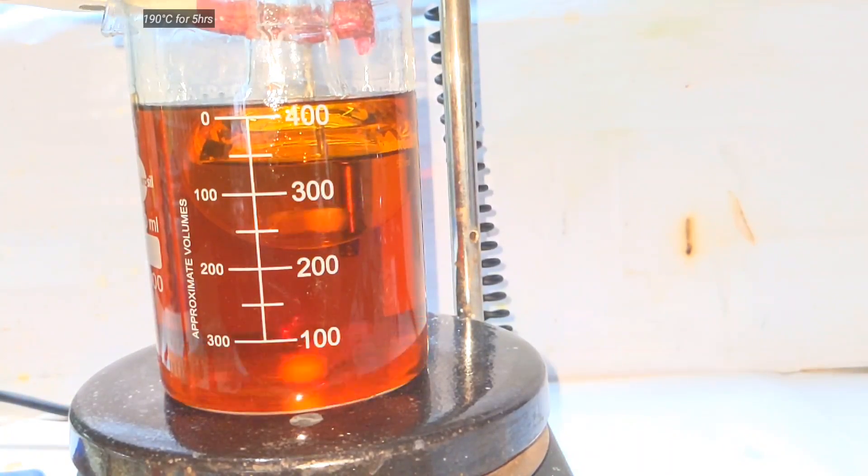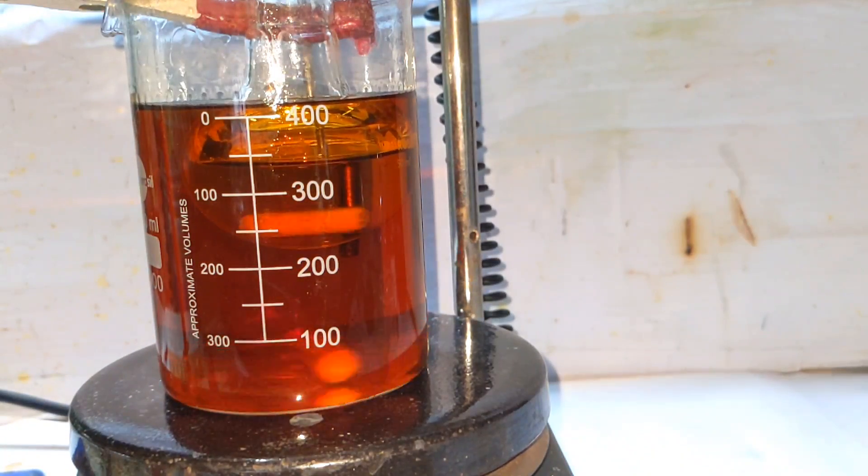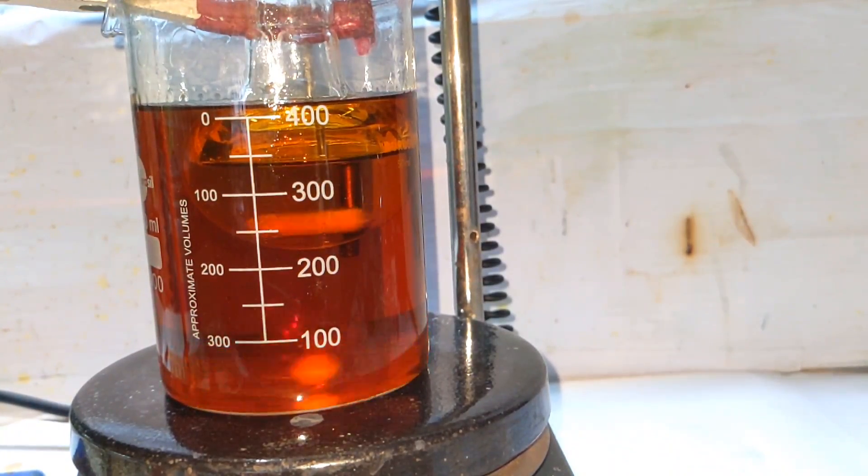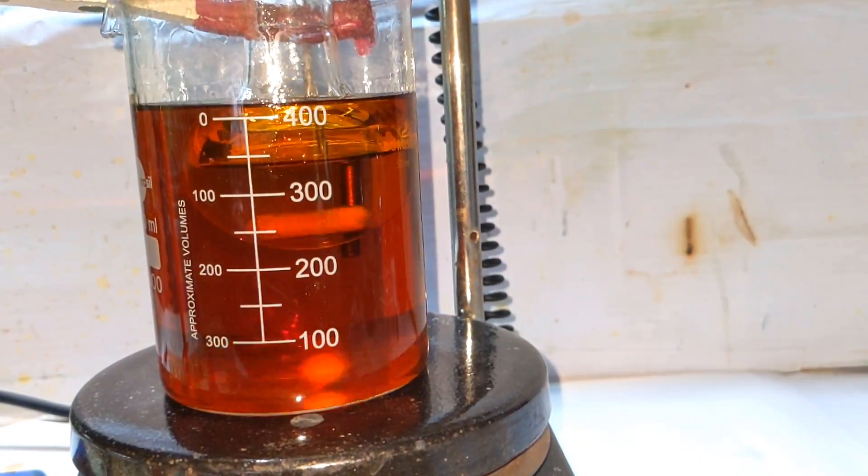All that time is required for sulfonation to complete properly. If oleum is used instead of concentrated sulfuric acid, only one hour is required. Temperature must be strictly maintained below 190 degrees Celsius or overheating can cause charring and destroy our product.